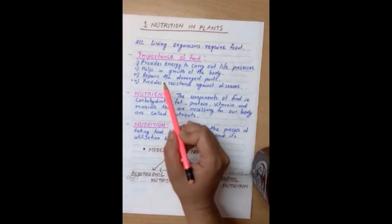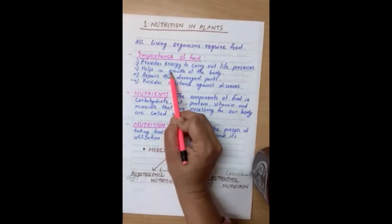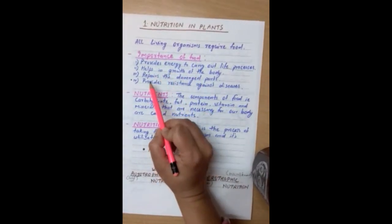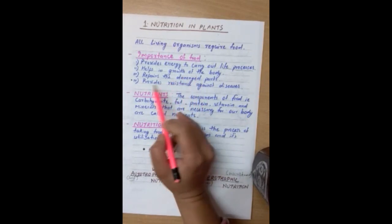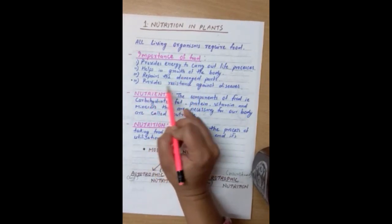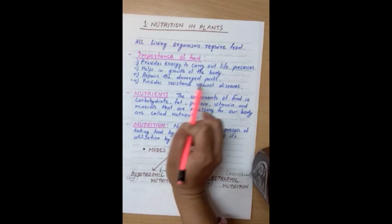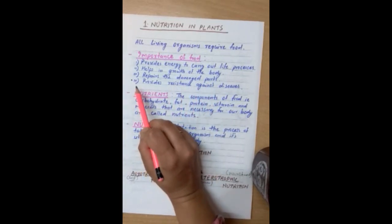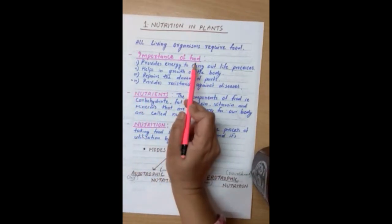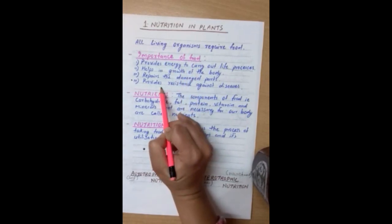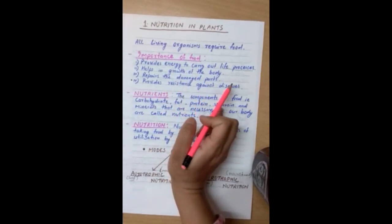Now, coming to the second point. It helps in growth of the body. Third point: Repairs the damaged parts. Fourth point: Provides resistance against diseases. Please make note on the fourth point. Here, food stands for healthy food only. Healthy food provides resistance against diseases.